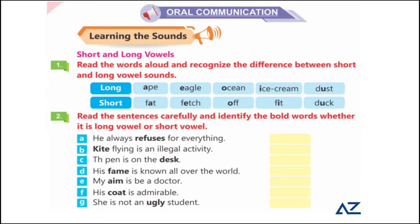Welcome dear students. Today we are going to do the exercise of unit number three of our Modern English book. Please open page number 32. We will learn about long and short vowel sounds — we have already done that. Read the word aloud and recognize the difference between short and long vowels.